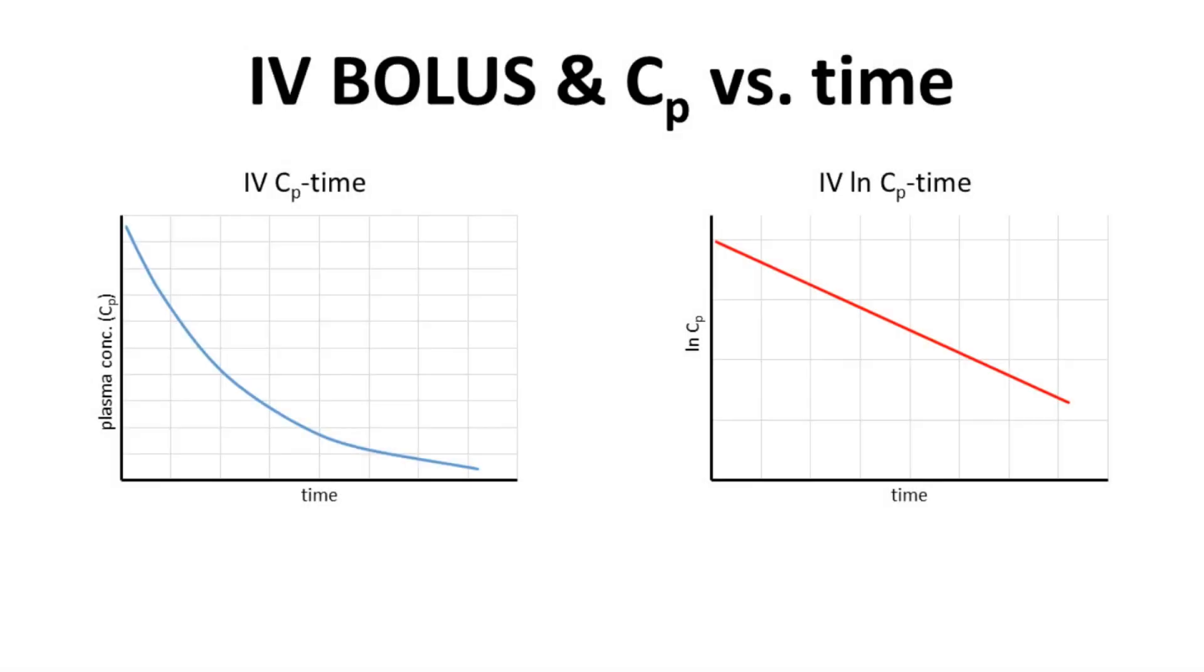Here are two familiar graphs. On the left, we have a CP time curve for an IV bolus. All the drug is essentially instantaneously injected into the bloodstream of a patient, so not into a muscle or under the skin—intravenous, IV.